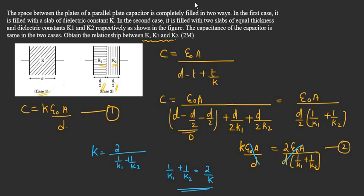We can leave it like this or we can simplify it further. The final answer will become k is equal to 2 k1 k2 divided by k1 plus k2.